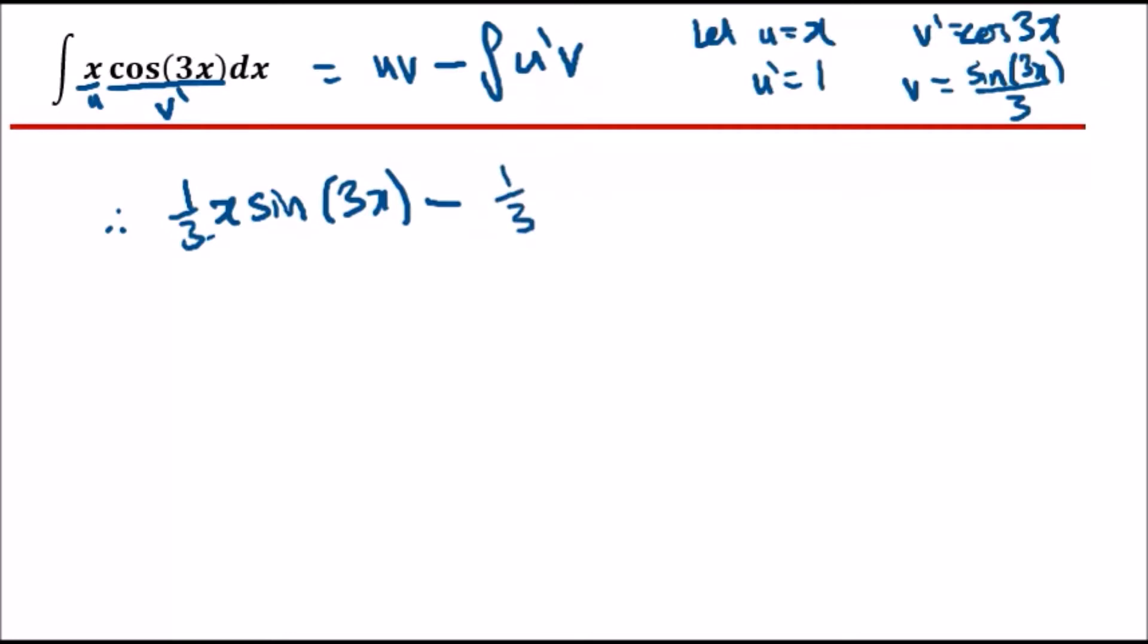sine(3x) dx. In this case, sine(3x) is going to give us a negative cos(3x) over 3.